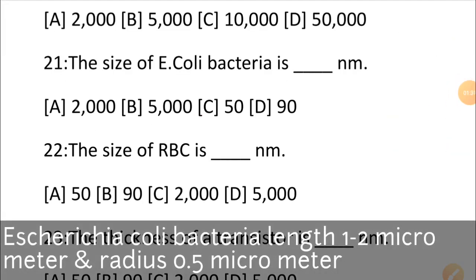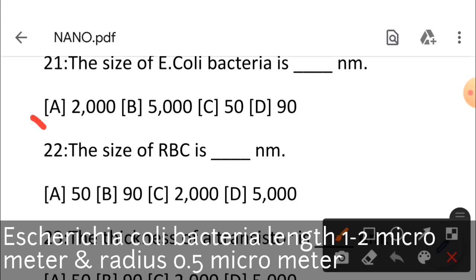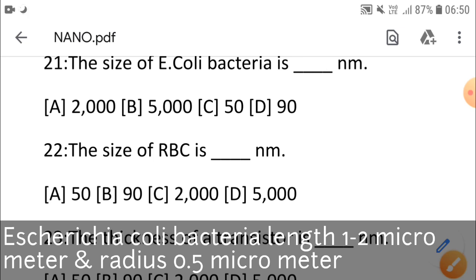Next question is number 21: the size of E. coli bacteria is dash nanometer. E. coli bacteria has a cylindrical shape which is 1 micrometer to 2 micrometer in length and 0.5 micrometer radius. The answer is 2000. Why? Because the length is 1 to 2 micrometer. Converting 2 micrometer to nanometer gives 2000 nanometer. Option A, 2000 nanometer.